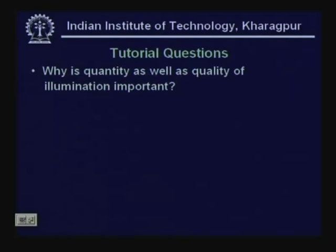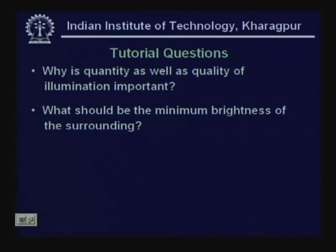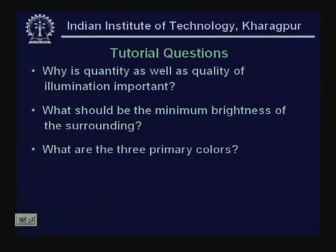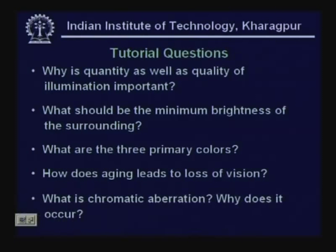Some review questions: Why is quantity as well as quality of illumination important? What should be the minimum brightness of the surrounding? What are the three primary colours? How does ageing lead to loss of vision? What is chromatic aberration and why does it occur?